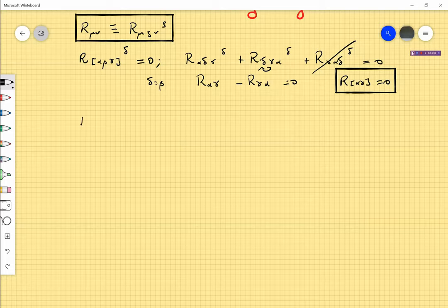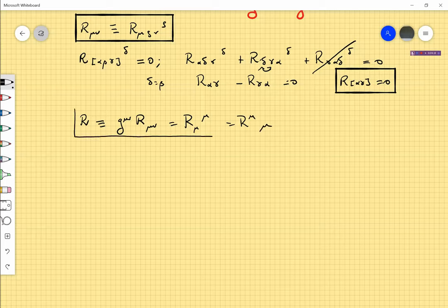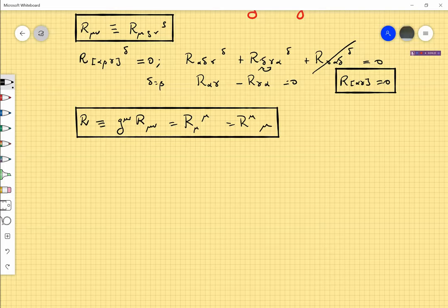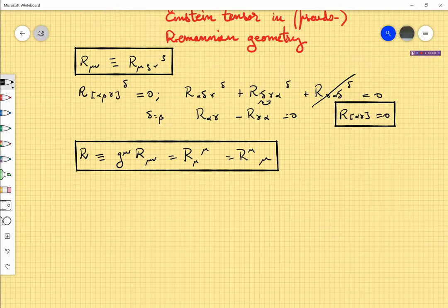You can define the Ricci scalar. The Ricci scalar is defined as R = g^μν R_μν, or if you want R_μ^μ or R_ν^ν, because of the symmetry properties of the Ricci tensor. I didn't say Ricci tensor and Ricci scalar.